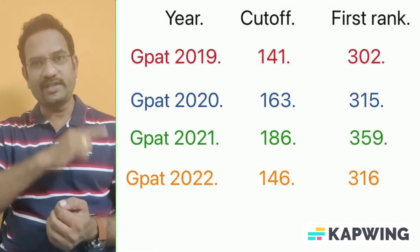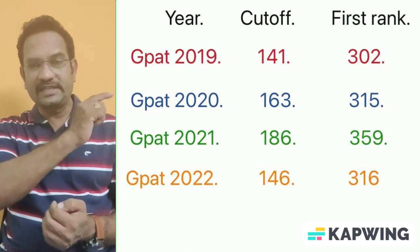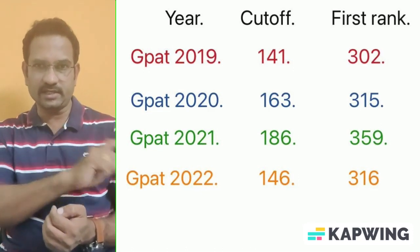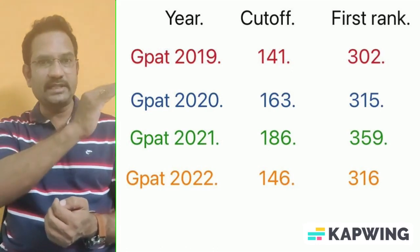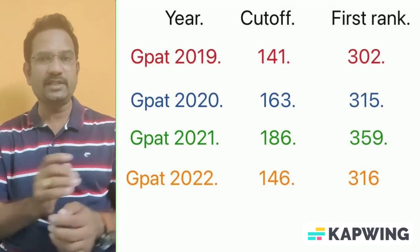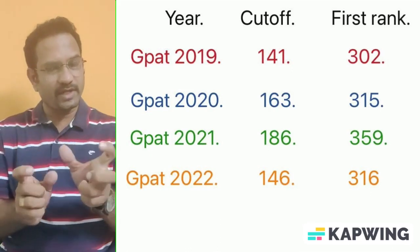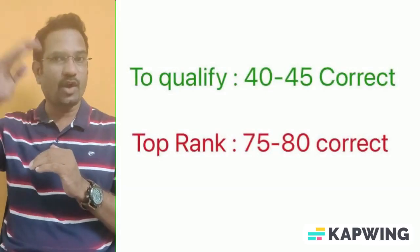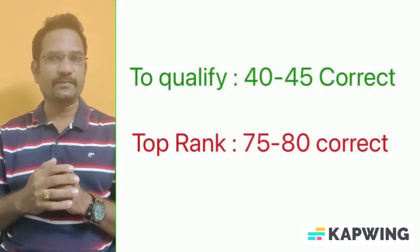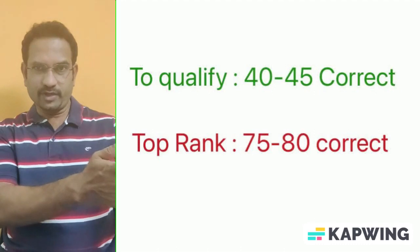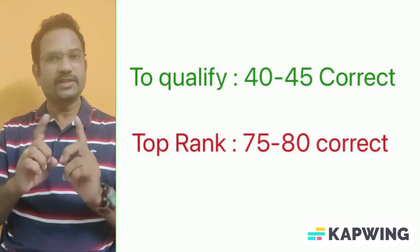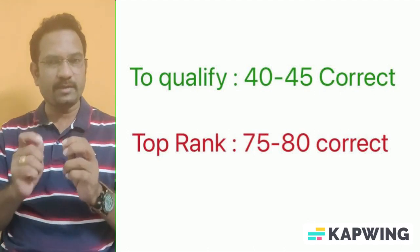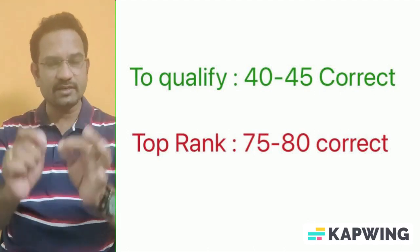Look at the first ranker marks — it is between 300 to 320. The all-India top ranker is getting 300 to 320 marks. That means if you could answer 75 to 80 questions correctly without any negatives, you will be in the top 50 of all-India ranks. So 40 to 45 correct and you get qualified; 75 to 80 and you are in the top 50. It's not a very difficult test — the problem comes with negatives and selection of choices.